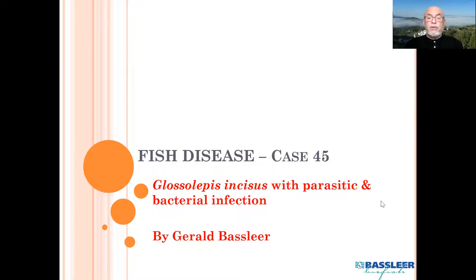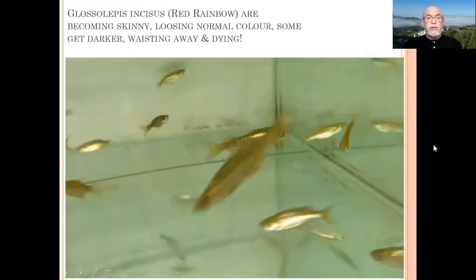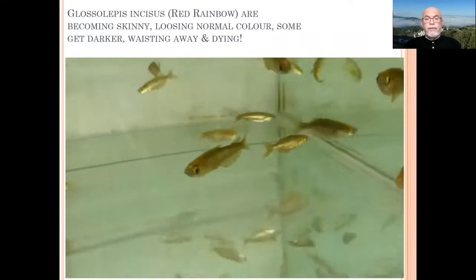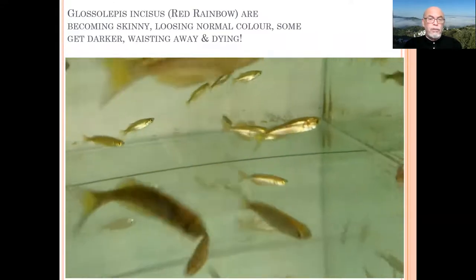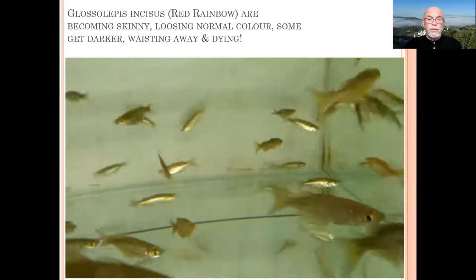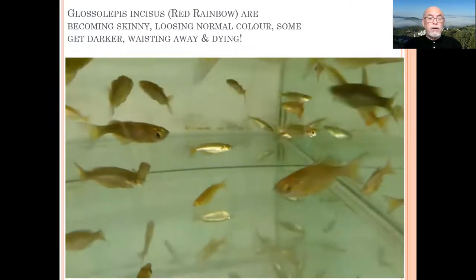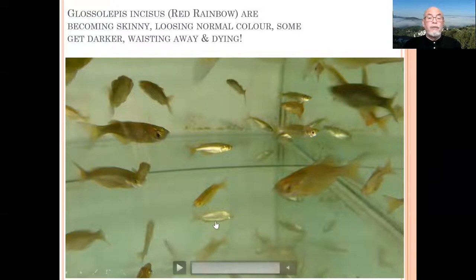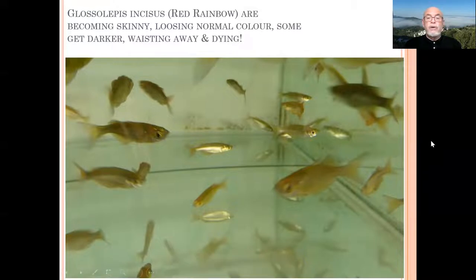This red rainbow is one of the most popular fish, but lately we see quite some problems appearing. It starts with a few fish in the group becoming skinny, losing their normal color, some getting very dark, slowly wasting away and dying. It's one of those cases where you don't see any particularly easy-to-spot parasites or wounds — it's just the wasting away of a fish.